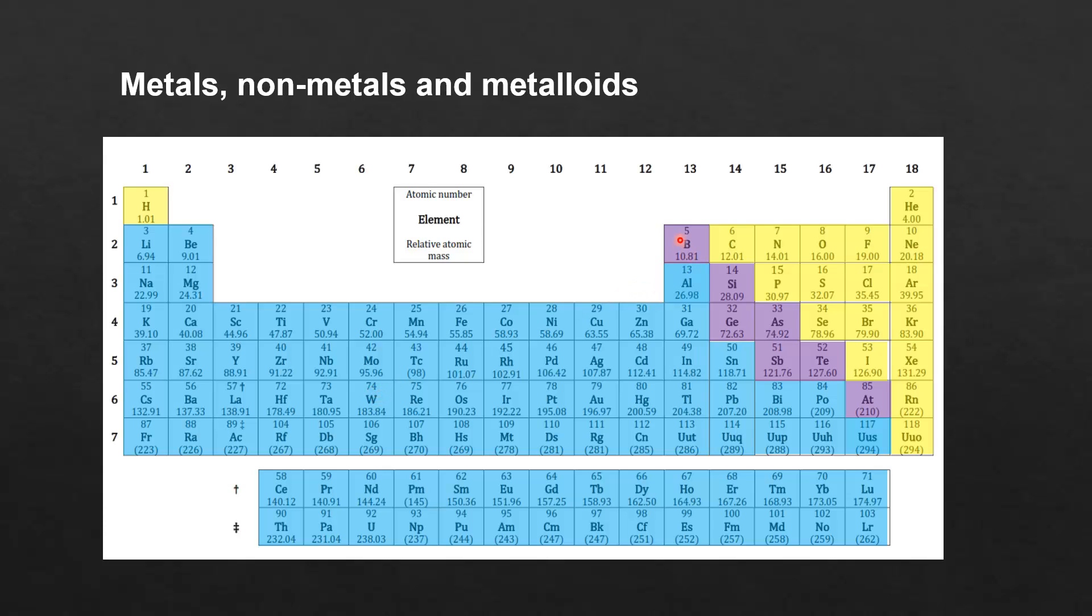The elements shaded in the purple color, they are metalloids or semi-metals. And the elements shaded in yellow, they are the nonmetals, and they are found mostly on the right side of the periodic table.